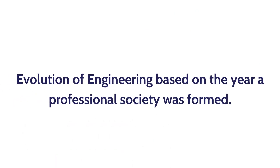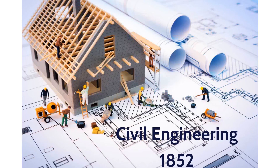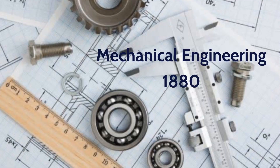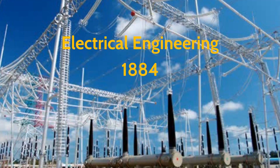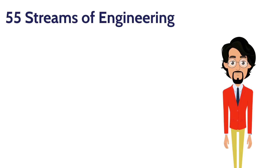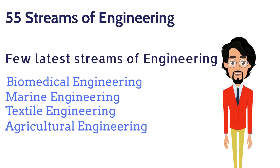Now let us see when a professional society was formed for each stream of engineering. Engineering has been developing ever since it was known to us. At present there are around 55 streams of engineering. Some of the latest streams are biomedical, marine, textile and agricultural engineering.